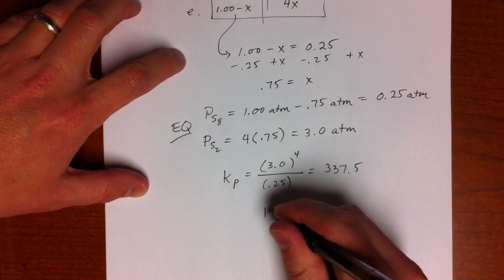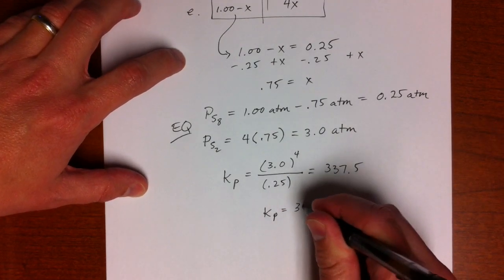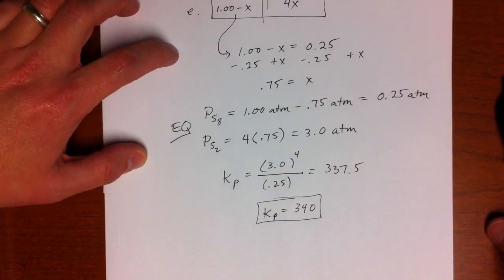So two significant figures. KP would be 340. Okay, that's it.